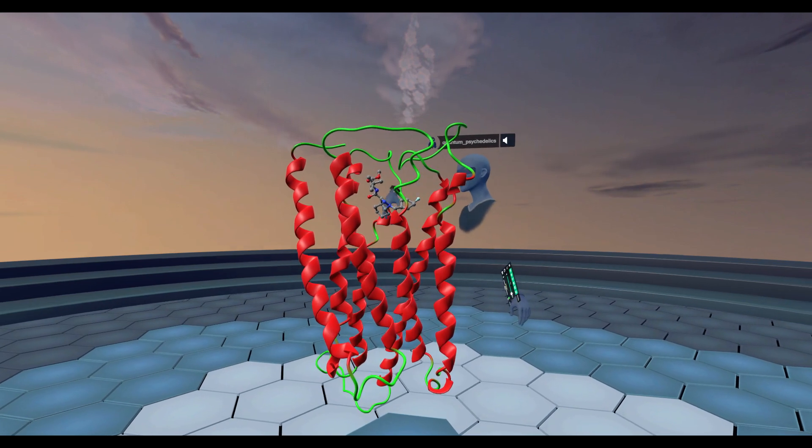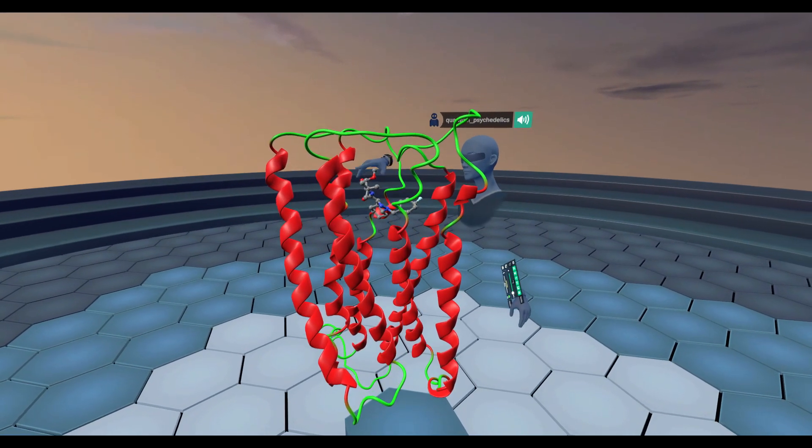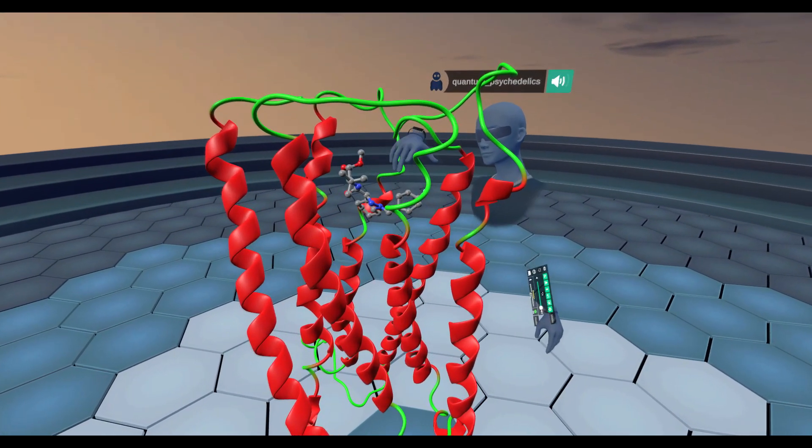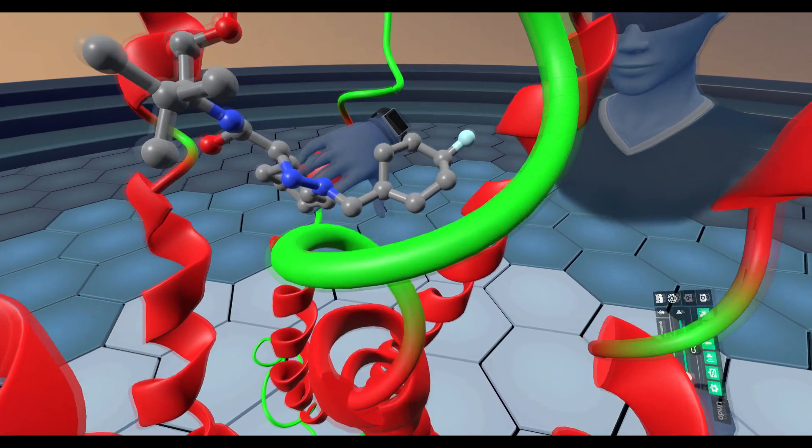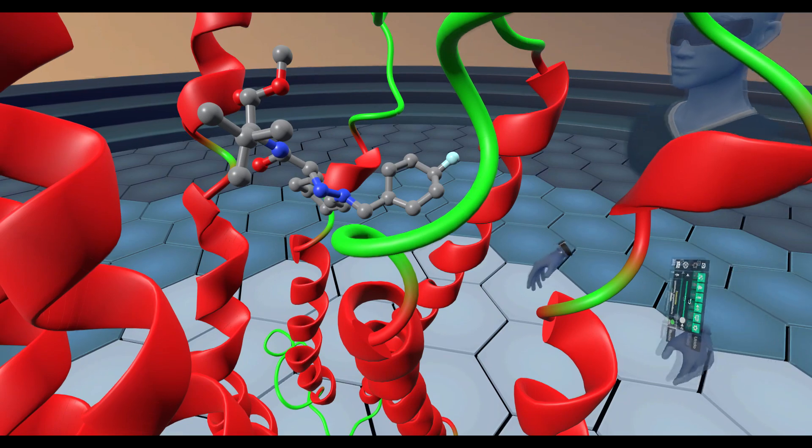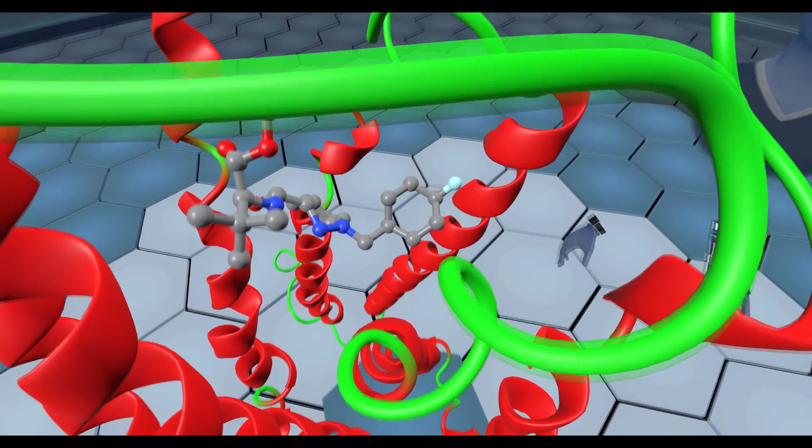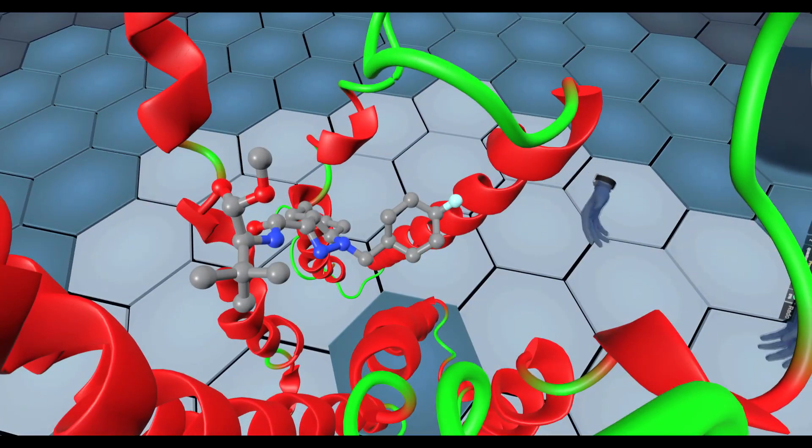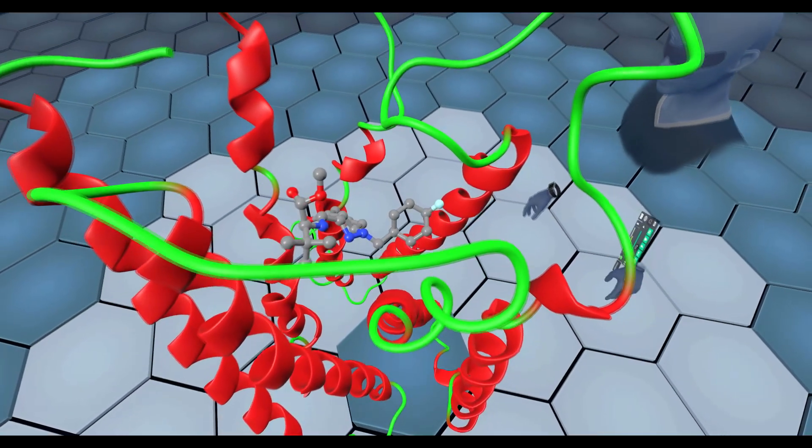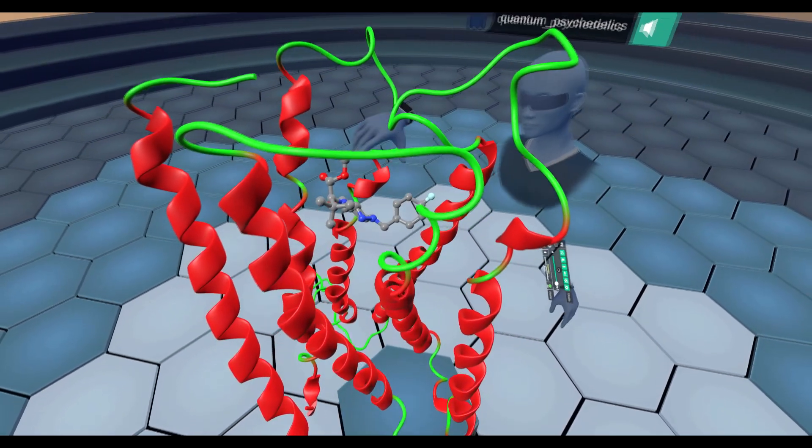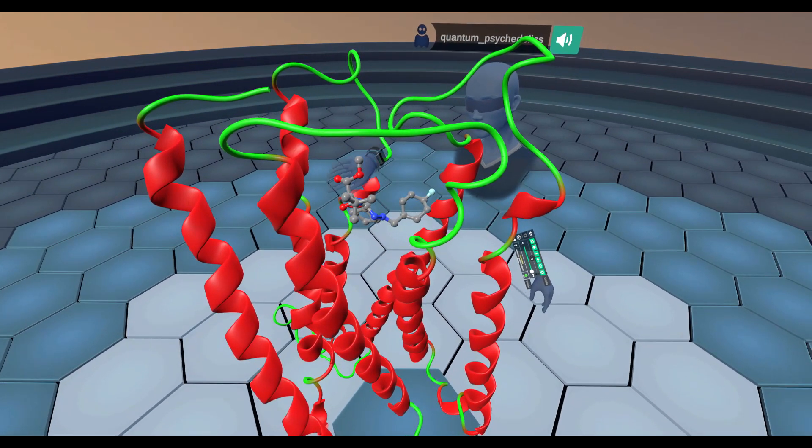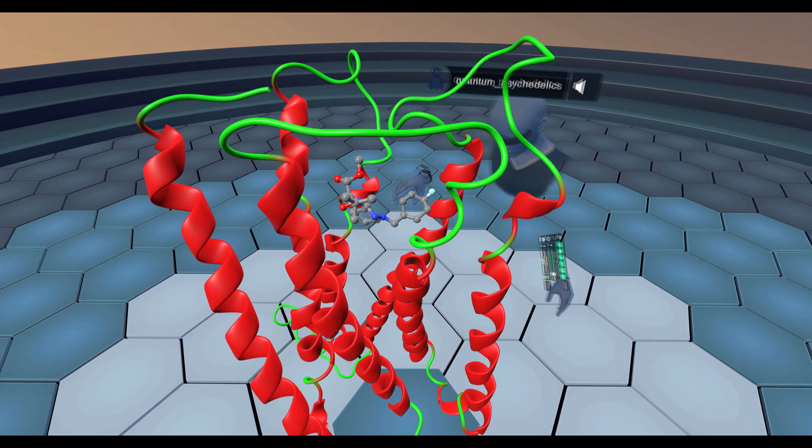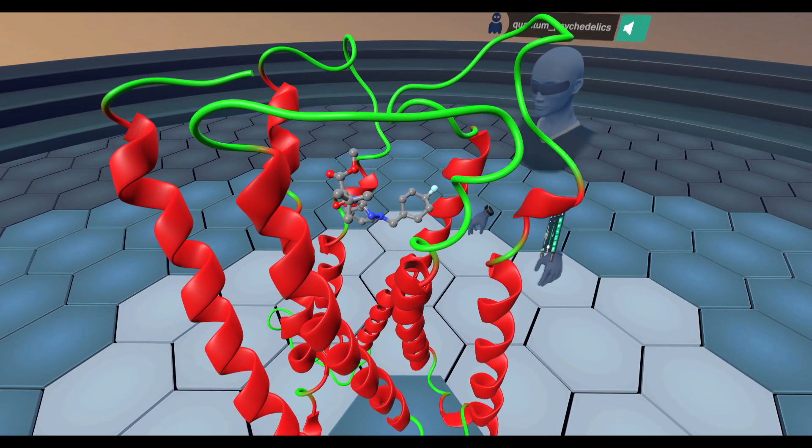As we can see here in the middle of the receptor, we have a ligand bound. This ligand is an agonist, which when it binds to the receptor, activates the receptor. The endogenous ligands that your body naturally produces bind to this orthosteric binding site in the middle of the receptor.